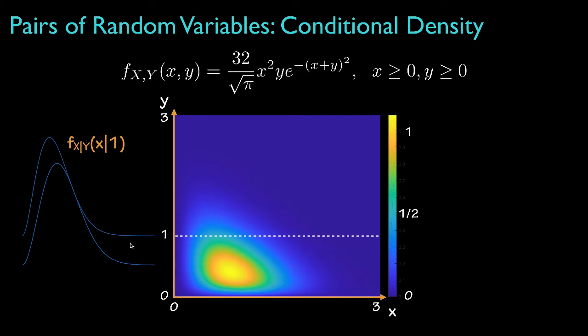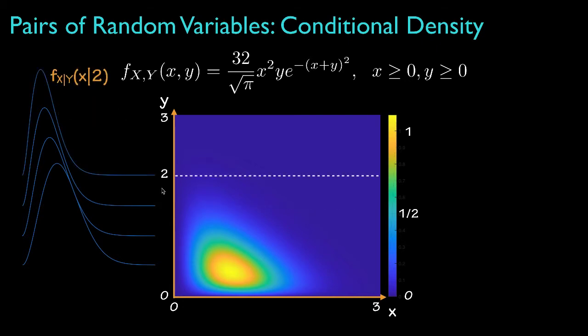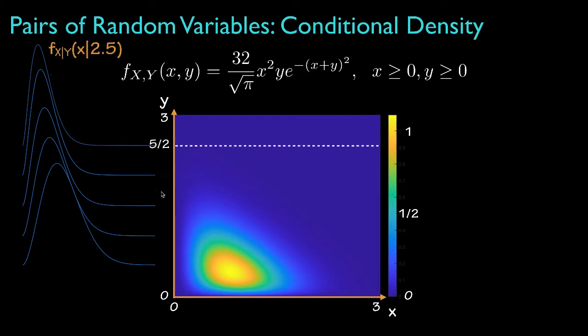Here's what the conditional density looks like when y is equal to one — and as a reference, I've left the conditional density for y equal to one-half on the plot. Here's what it looks like when y equals 1.5, and when y is equal to two, and when y is equal to 2.5.